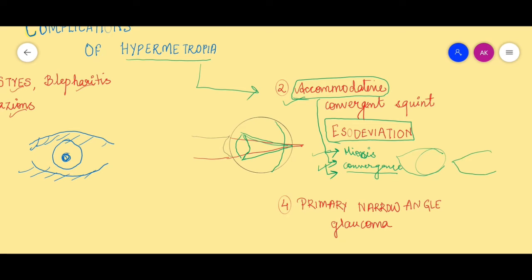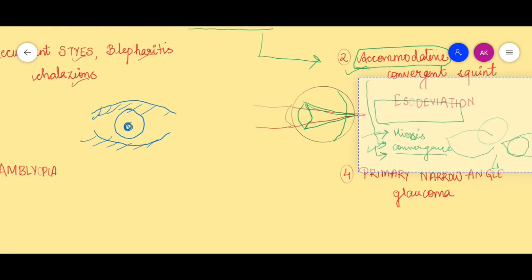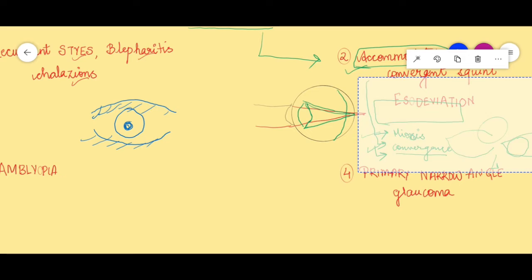This inward movement of the eye is called esotropia. So the type of squint which is common in hypermetropes is accommodative convergent squint. This type of squint usually gets resolved when we give them glasses.